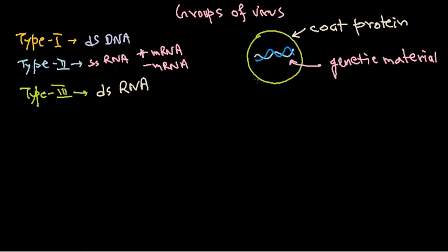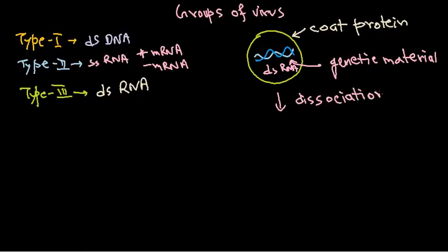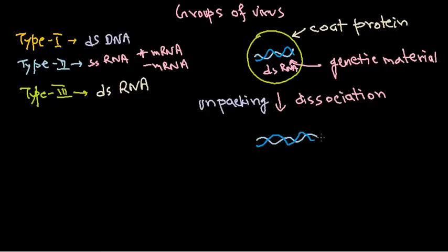This virus enters inside the host cell, and after entering it needs to produce coat proteins for assembly and also needs to provide double-stranded RNA. So it is a dsRNA virus, which is uncommon. After engulfment and entry inside the host cell, dissociation or unpacking occurs. After this unpacking process, we get only the double-stranded RNA.